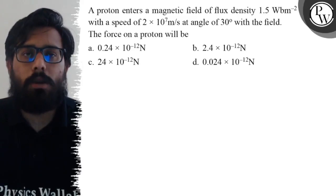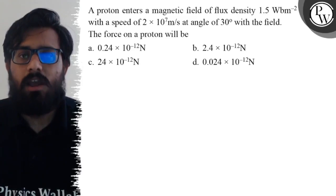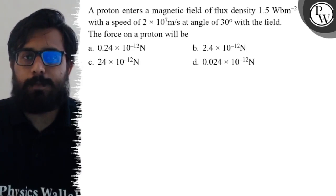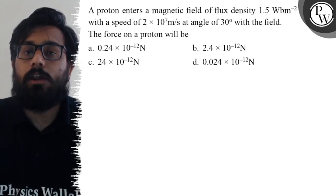Hello bachos, let's see the question. A proton enters a magnetic field of flux density 1.5 Weber per meter squared with a speed of 2 × 10^7 m/s at an angle of 30° with the field.